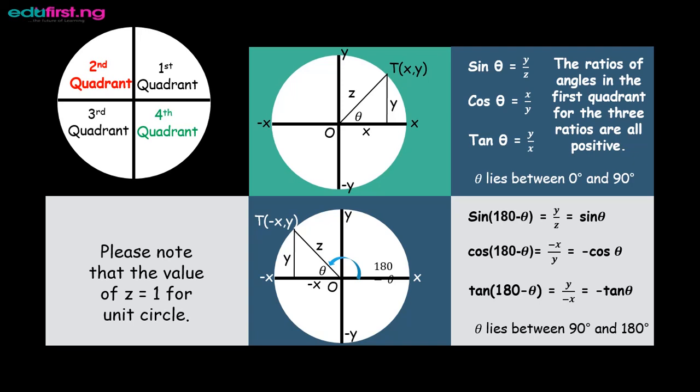For the first quadrant, we have a triangle inside the circle with the adjacent as x, the opposite as y, and the hypotenuse as z. Sine theta becomes y over z, cos theta gives us x over z, and tan theta gives us y over x. Using SOHCAHTOA, all the ratios of these angles are positive in the first quadrant.